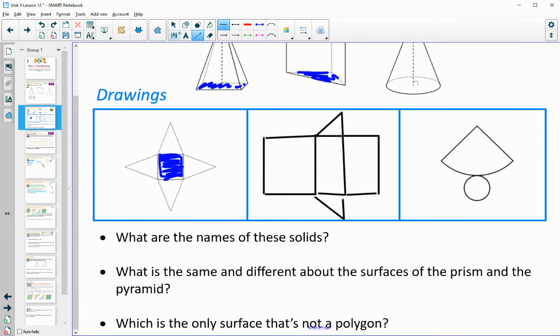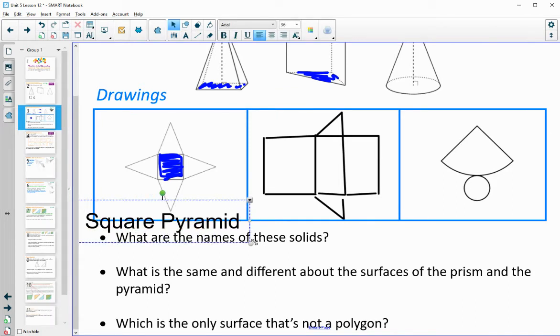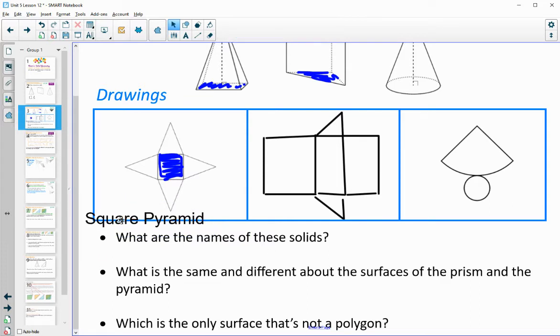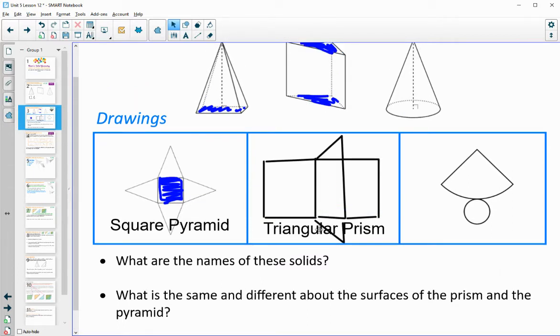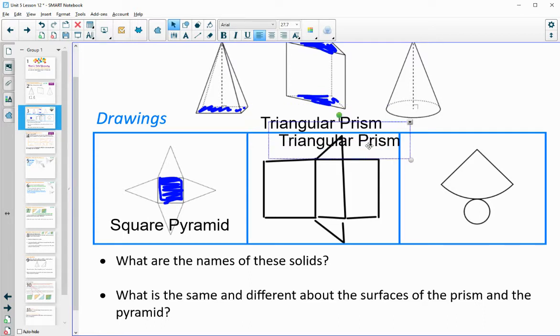So what are the names of these solids? This first one was a square pyramid, since the base shape was a square and it went up to a point. This one had the two triangular bases - a triangular prism, since it stays uniform in shape, top to bottom. And then a cone - a circular base that goes up to a point.